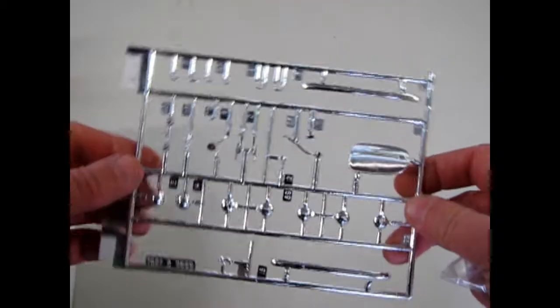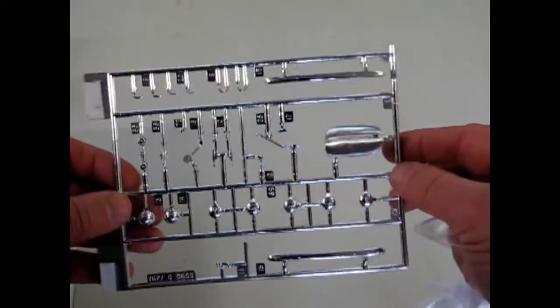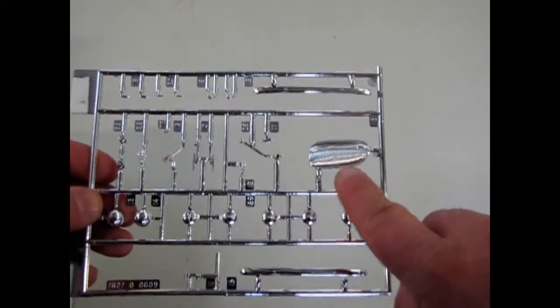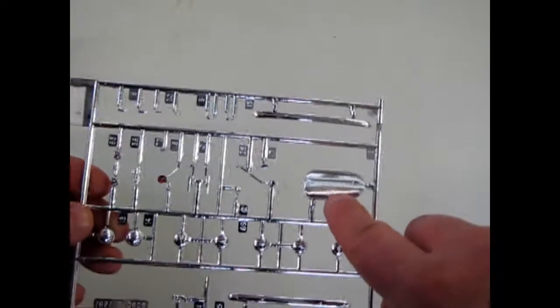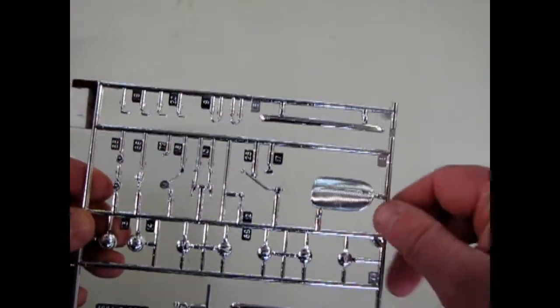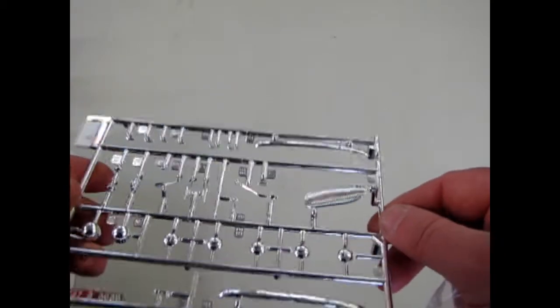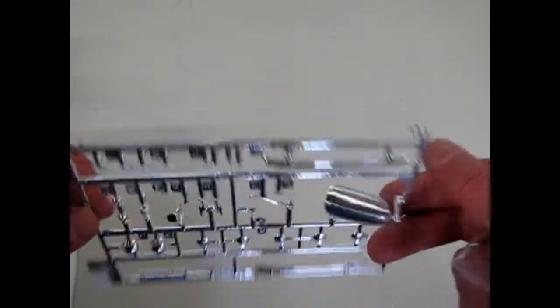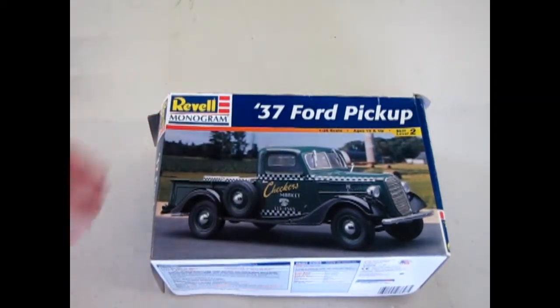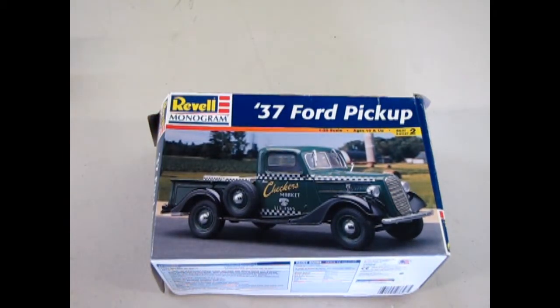And the chrome tree. And for you hot rod fans, the 37 Ford trucks and delivery vans have this very nice detailed grill which has been used on 32 Ford hot rods and certain things like that. So that brings us to the conclusion of our 37 Ford pickup truck model by Revell Monogram.